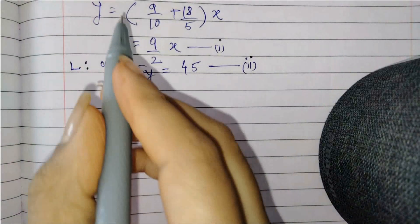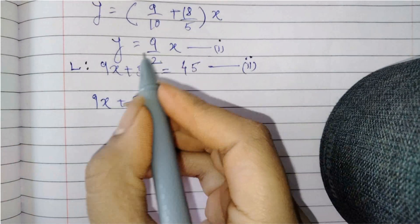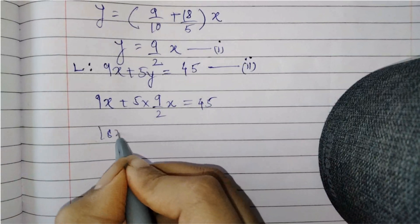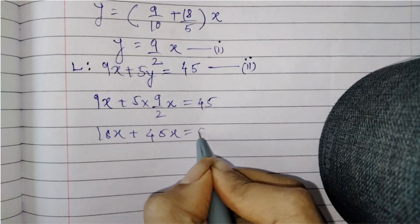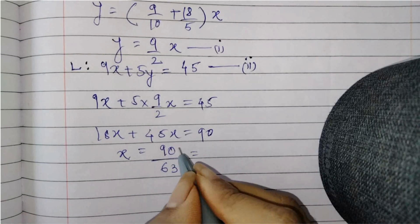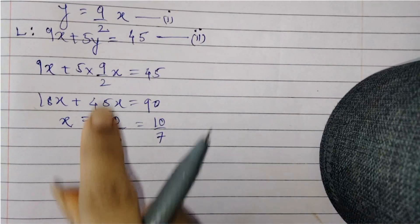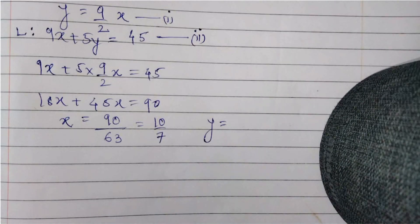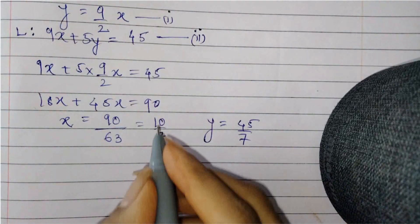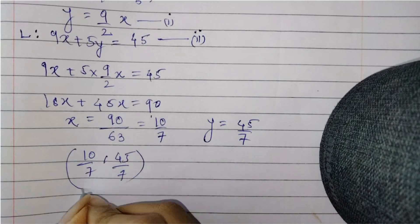Substituting y equals (9/2)x into line L: 9x plus 5·(9/2)x equals 45, giving 18x plus 45x equals 90, so 63x equals 90, thus x equals 90/63 which is 10/7. Substituting x back gives y equals 45/7. So the point of intersection is (10/7, 45/7).